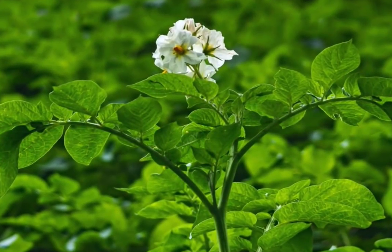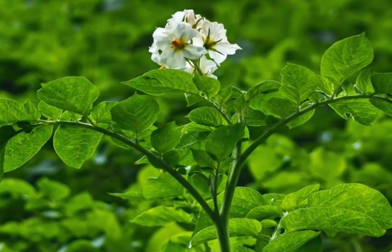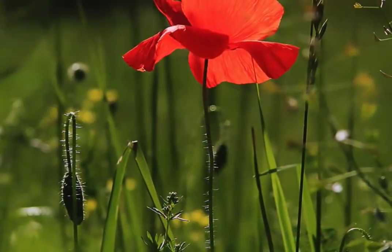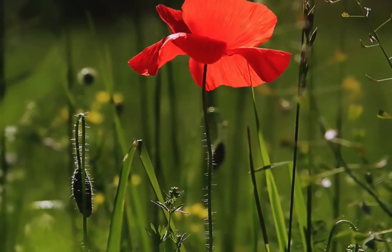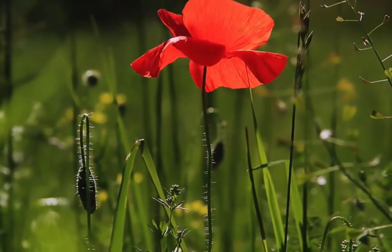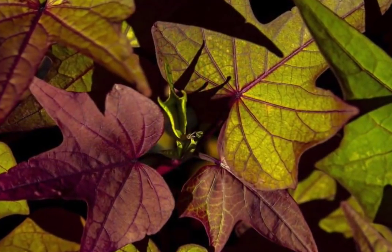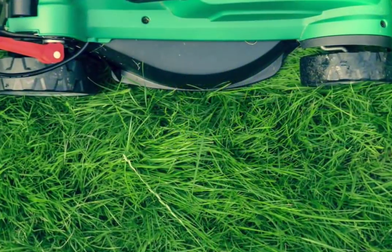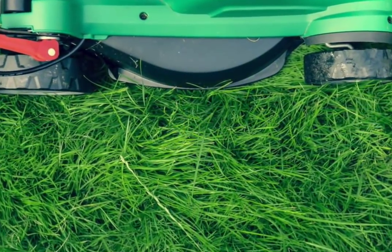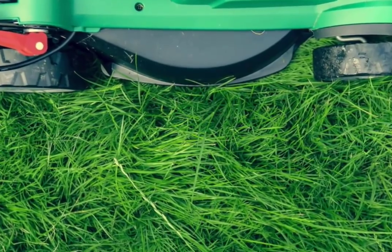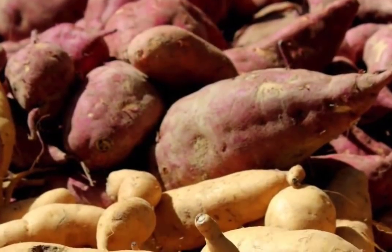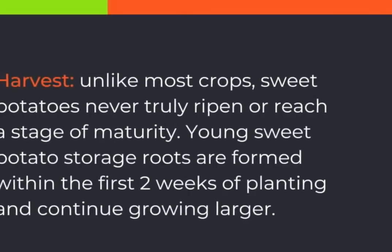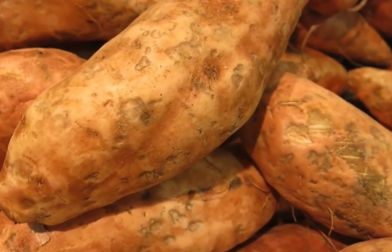The best way to control weeds in the home garden is by shallow hoeing, hand removal and mulch. A layer of mulch 2 to 3 inches thick should suppress most weeds and help maintain even soil moisture during the growing season.